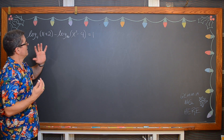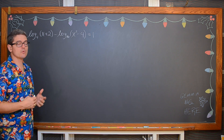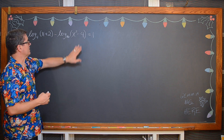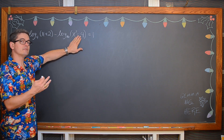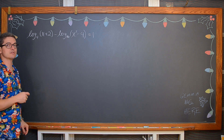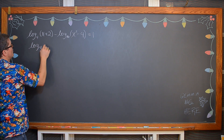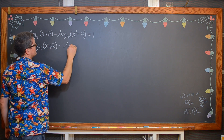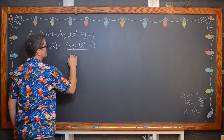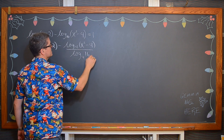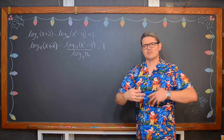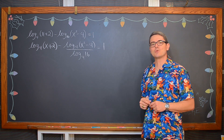The change of base formula says that I can rewrite a logarithm into any base I would like. I am just going to take the log of whatever base I would like of (x squared minus 4) and then divide that by the log base of whatever I want to go into — of 16. So we are going to rewrite this with a base of 4 and then have log base 4 of (x plus 2) minus the log base 4 of (x squared minus 4) over the log base 4 of 16, and that is going to be equal to 1. If you would like a review of the change of base formula, I will put a link to that lesson in the description of the video as well.